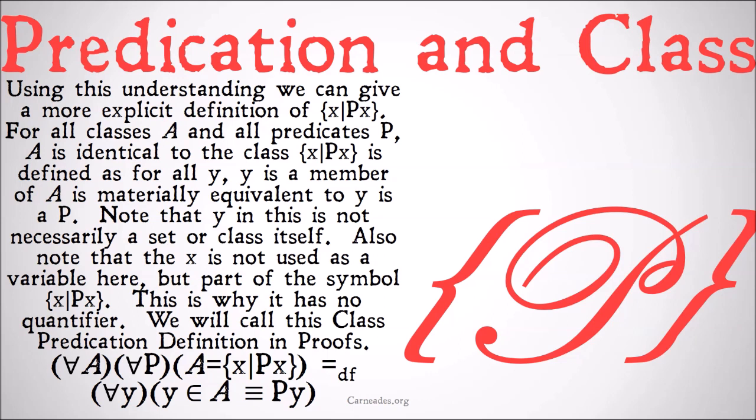Formally, we might state: for all classes A and all predicates P, A is equal to the symbol X-bar PX means by definition: for all Y, Y as a member of A is materially equivalent to Y is a P.